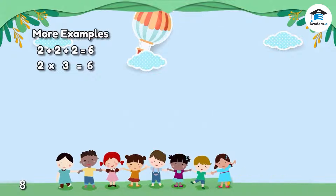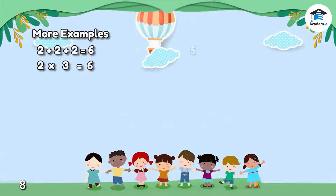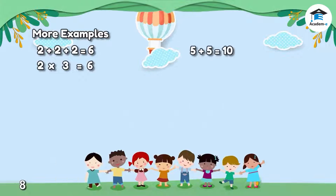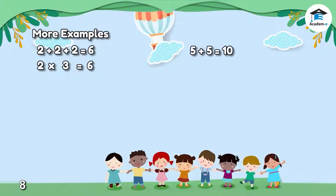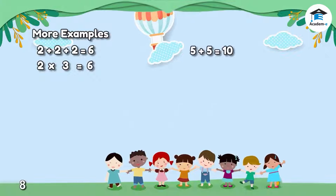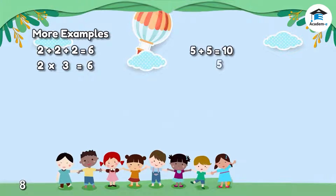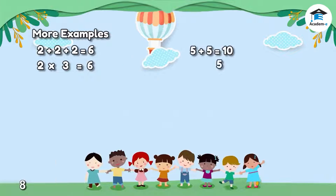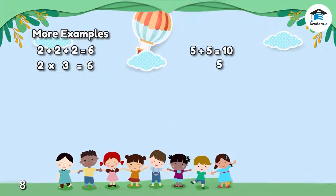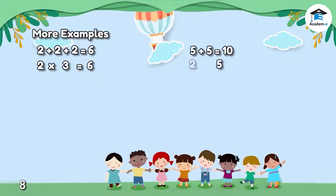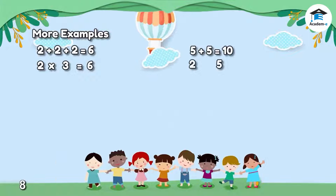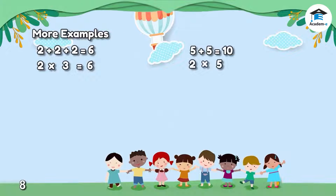In our second example, we have 5 plus 5, which is equal to 10. We're going to add up a batch of 5s. To put this in multiplication sentence, let's put 5 here. And how many 5s are we going to add up? 2. Let's put 2 here. In multiplication sentence, it is 2 by 5 and we get 10.